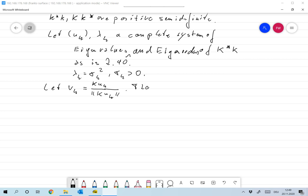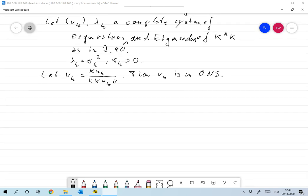And I claim that then v_k is an orthonormal system, and the v_k are again eigenvectors, are now eigenvectors...